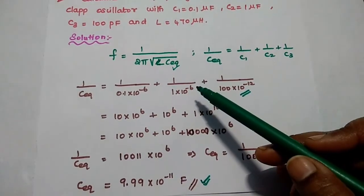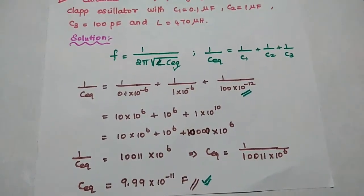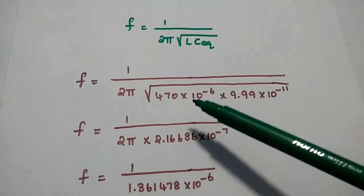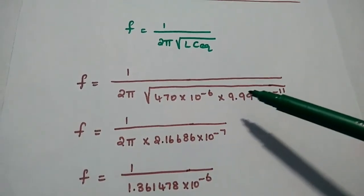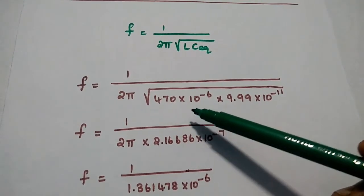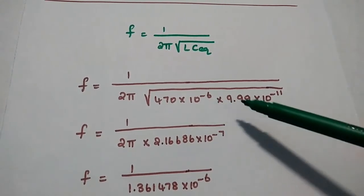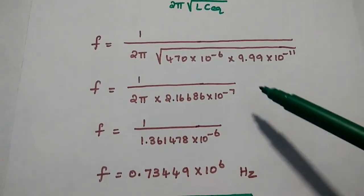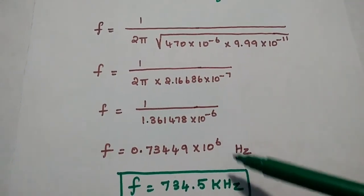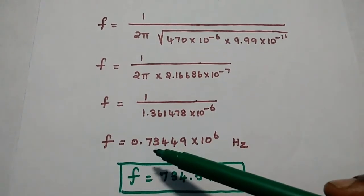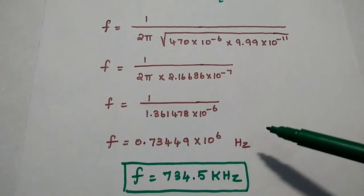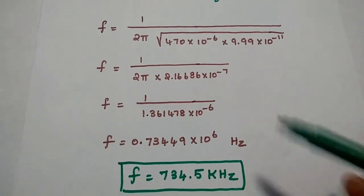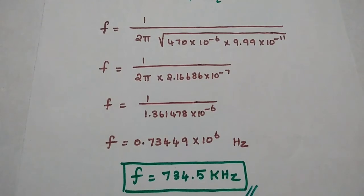We substitute this value in the frequency formula: F = 1 / (2π √(L × C_equivalent)), with L = 470 × 10⁻⁶ and C_equivalent = 9.99 × 10⁻¹¹. Simplifying with a calculator, we get F = 0.73449 × 10⁶ Hz, which can be written as 734.5 kilohertz. This is the frequency of oscillation for the given Clapp oscillator.